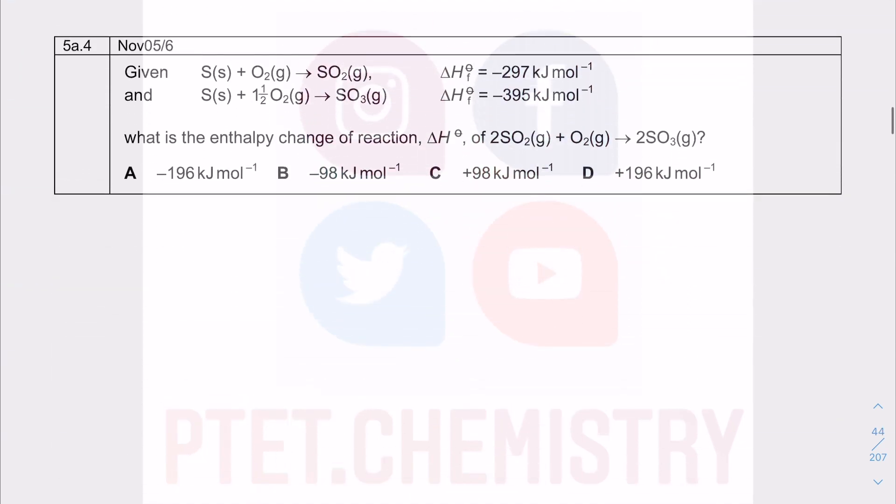So question 5A part 4, this is to do with, they give you two equations. The first of which I hope you can see is forming one mole of the substance from its element, all in their standard state. So this is equal to the enthalpy of formation of SO2. And then the second one is equal to the enthalpy of formation of SO3.